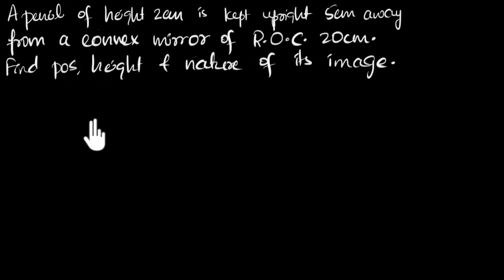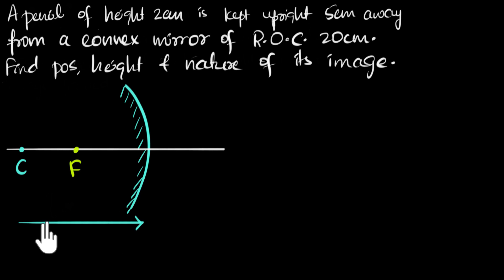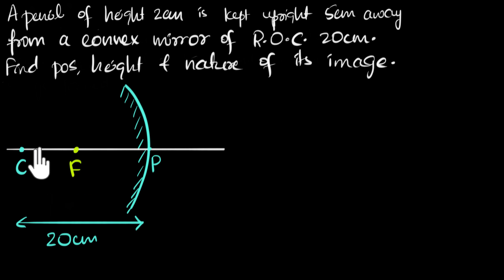The first thing we'll do is make a drawing of this situation. We have a convex mirror with a radius of curvature of 20 centimeters. In our mirror formula, we need the focal length. The principal focus is exactly in between the center of curvature and the pole. Therefore, if the radius is 20, our focal length must be 10 centimeters.